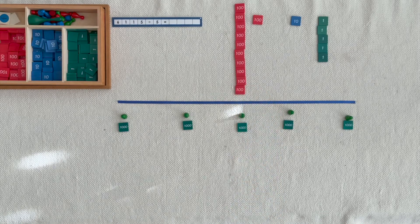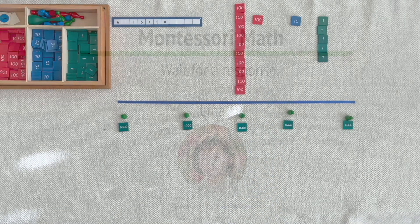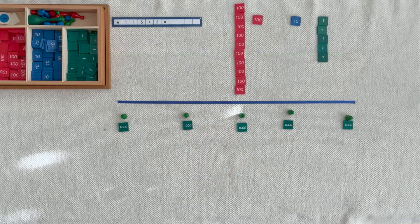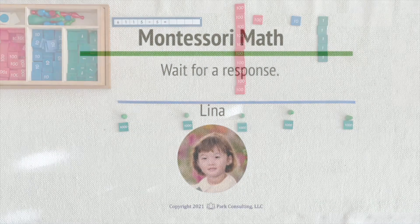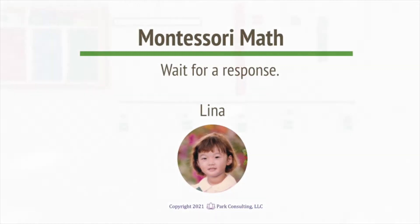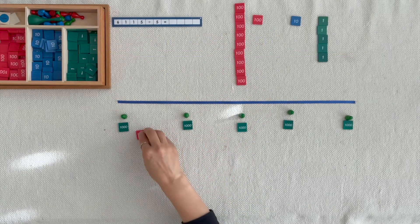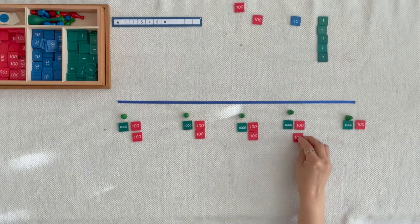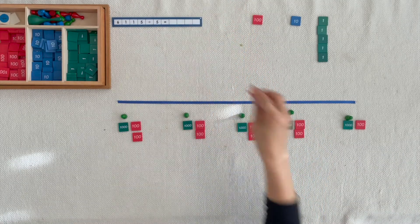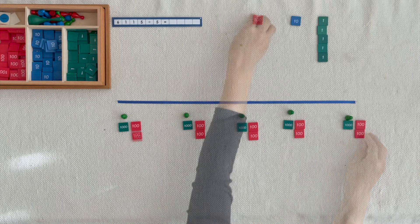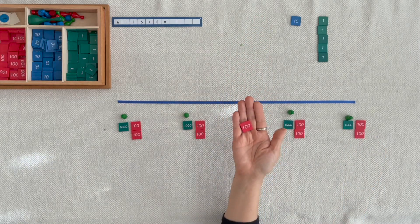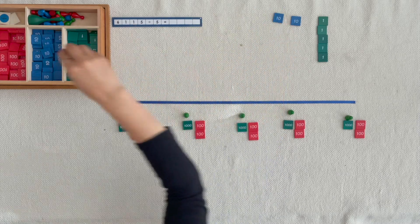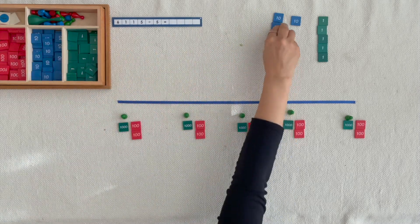Does each Skittle have the same amount? How many thousands does each have? 1 for you, 1 for you, 1 for you, 1 for you. We can't divide 100 equally among 5 Skittles, so we're going to exchange it for 10 tens.